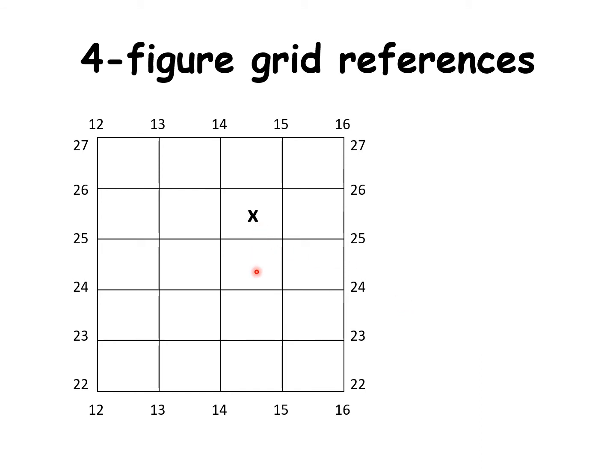Often students forget whether X is in 14 or 15. This is the way I remember. Go to the first number at the bottom, which is 12. Now, 12 isn't describing this bit of the grid. 12 must be describing this first column. So the first column is 12, the second column is 13, and X is in 14.